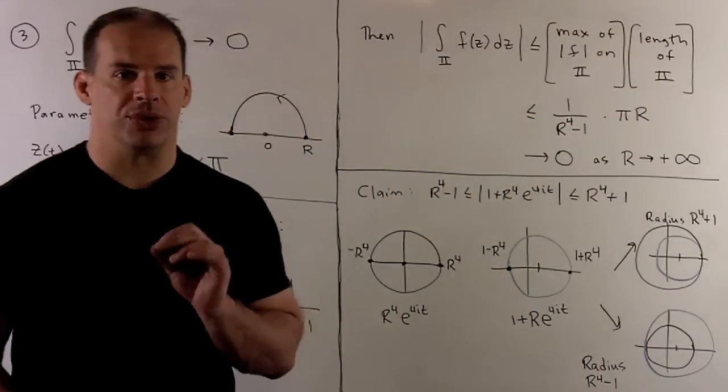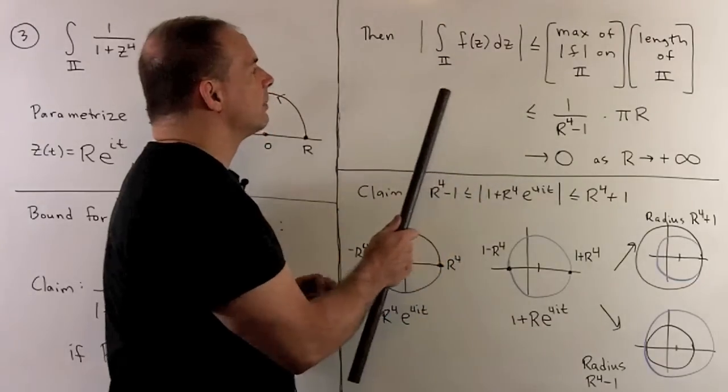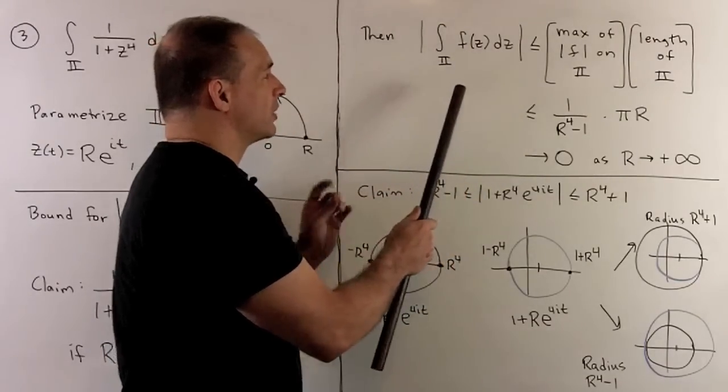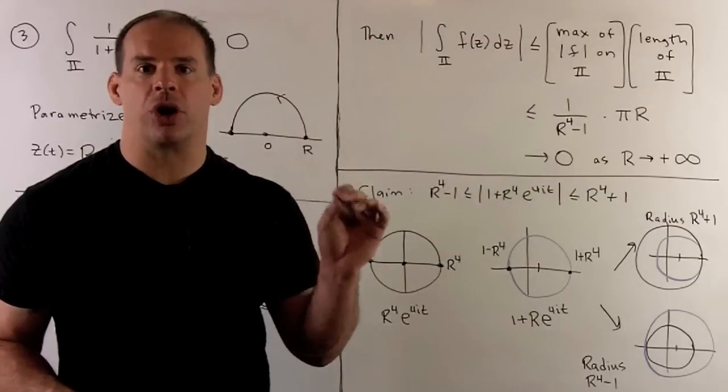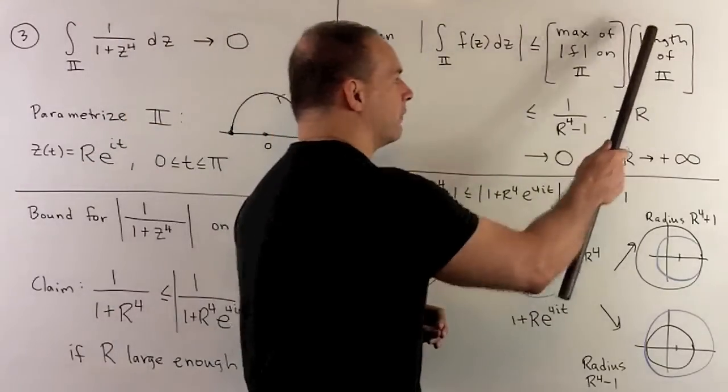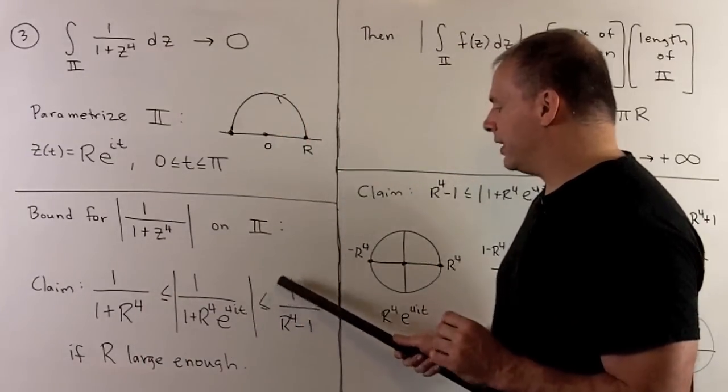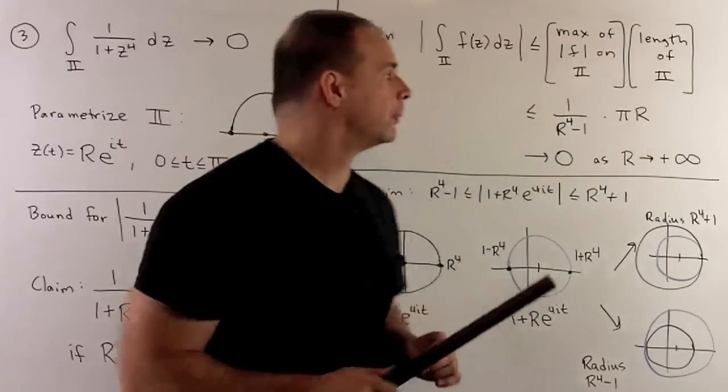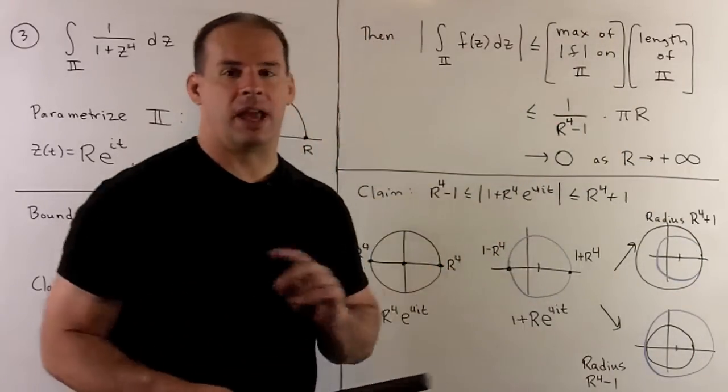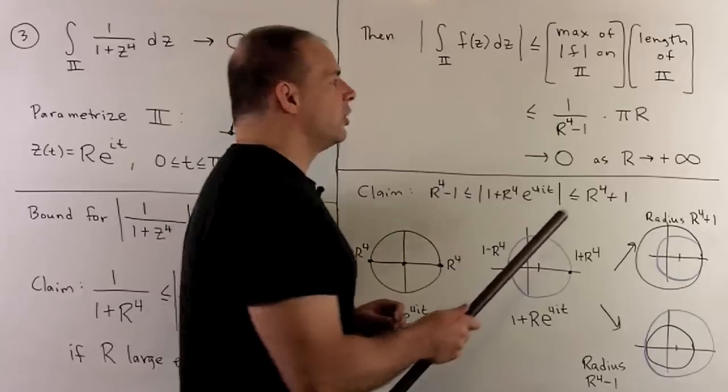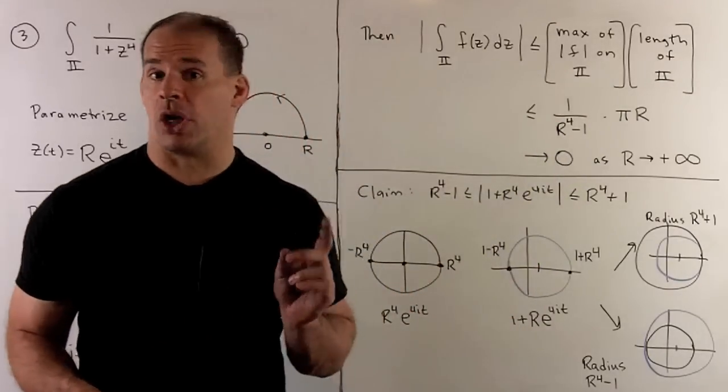Now, how do we use that? Well, we have a result that states: if we take the modulus of the line integral, that's going to be less than or equal to the maximum of the modulus of our function on the curve times the length of our curve. So, in this case, we have the upper bound of 1 over r to the 4th minus 1. We're going to take that, multiply by pi times r, the length of the semicircle. Then, you note, if we take the limit as this goes off to infinity, we're going to go to 0, and then that's our result.